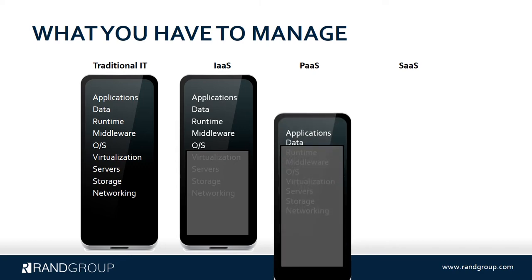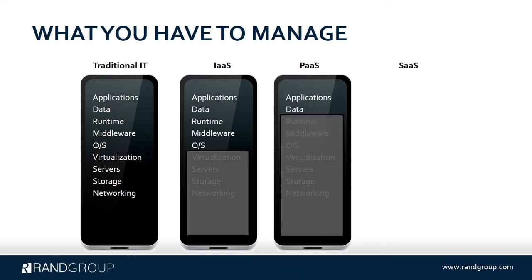Moving to platform as a service takes a few more layers out — the operating system, middleware, and runtime. Going back to the .NET application example, instead of being responsible for installing the operating system, patching it, installing IIS, installing .NET, and so forth, the user responsible for maintaining it would just be responsible for the actual application that's deployed and the data.